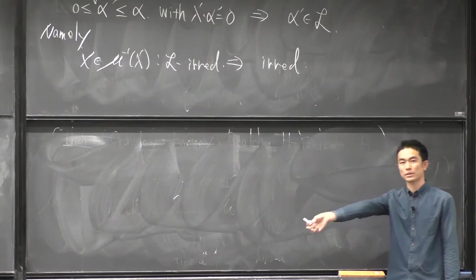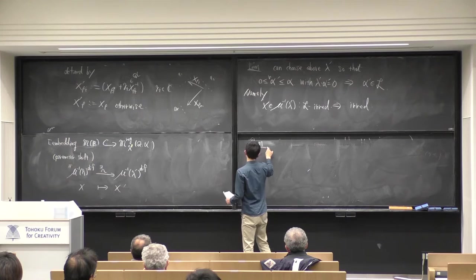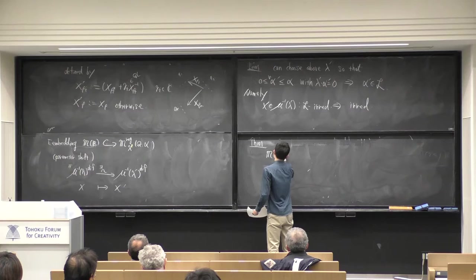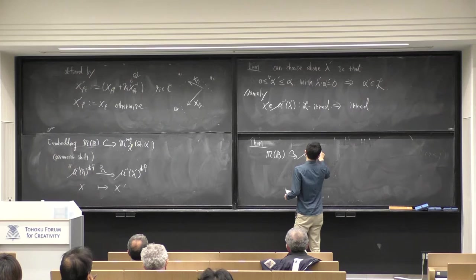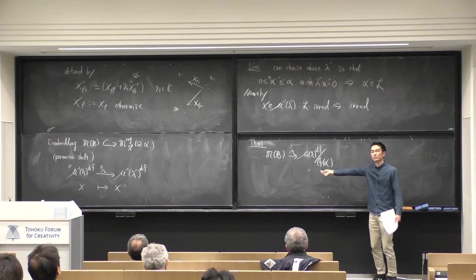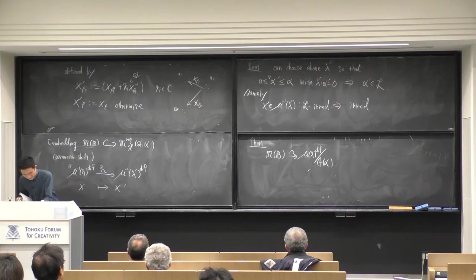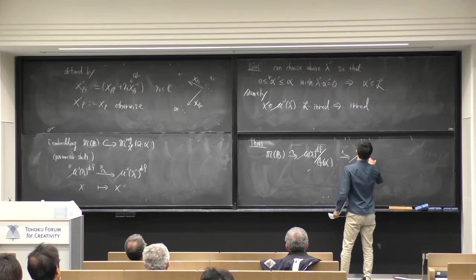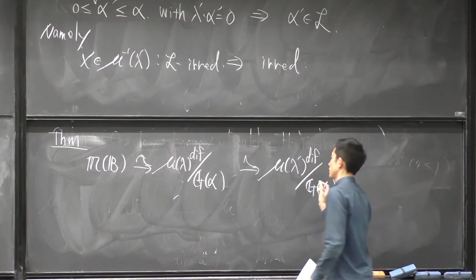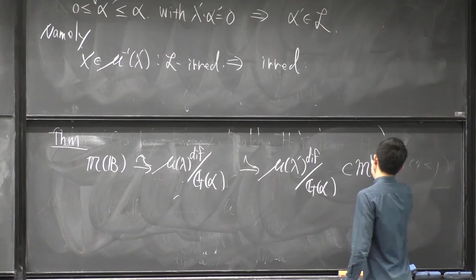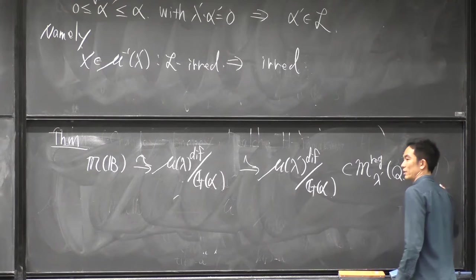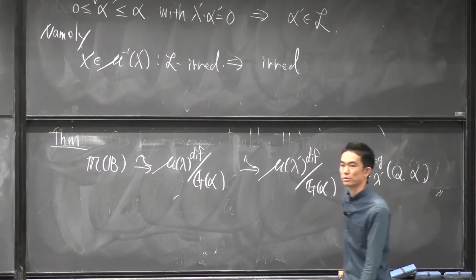We can choose the parameter shift to lambda prime so that the following good condition is satisfied: for any root vector alpha prime that is smaller than the original alpha, if the product with lambda prime is zero, then we can show alpha prime should be inside our L. We can always choose such a useful lambda prime by using this parameter shift. This means any sub-representation of X has dimension vectors living in L, so in this situation L-irreducibility is equivalent to usual irreducibility.